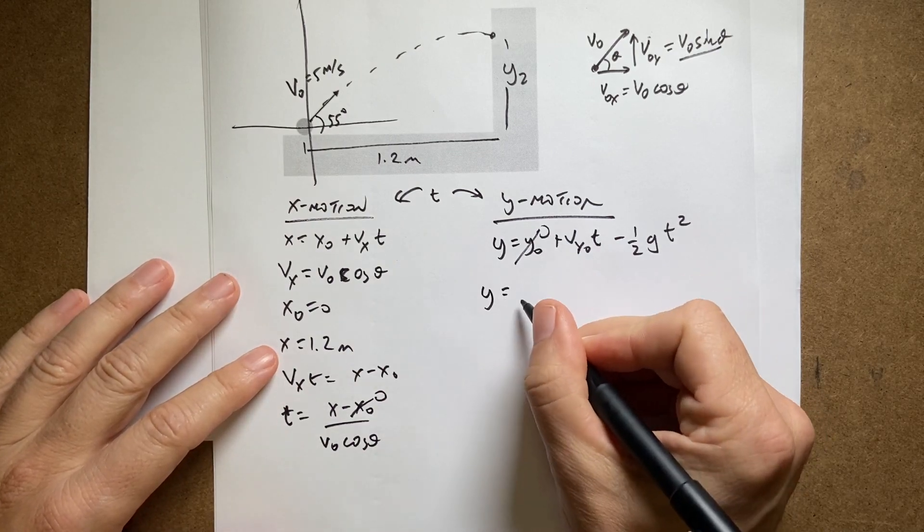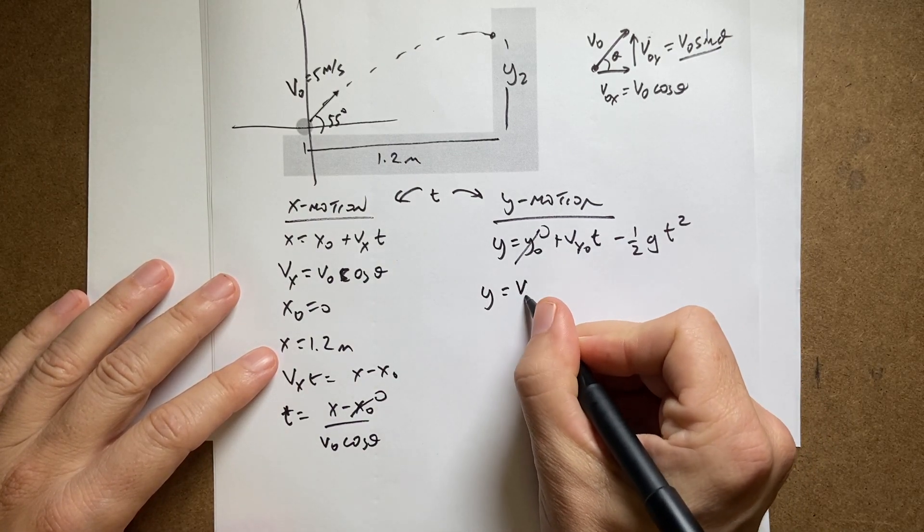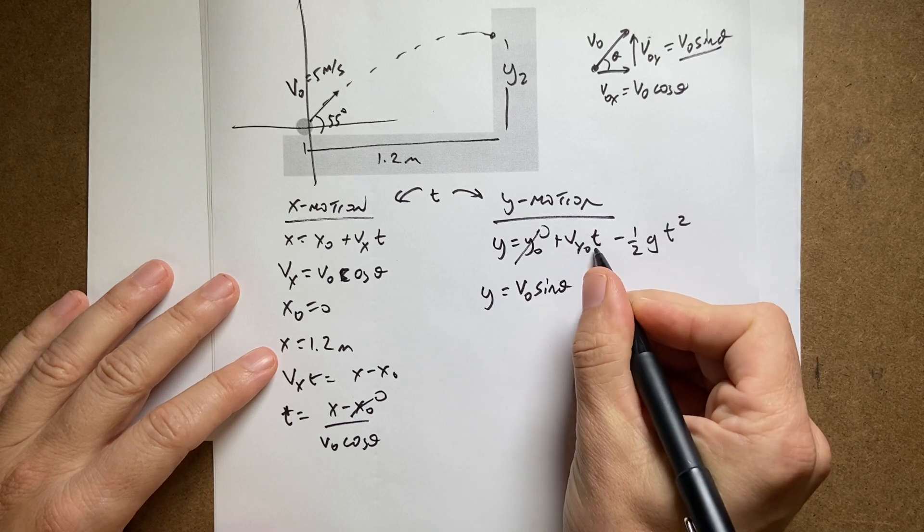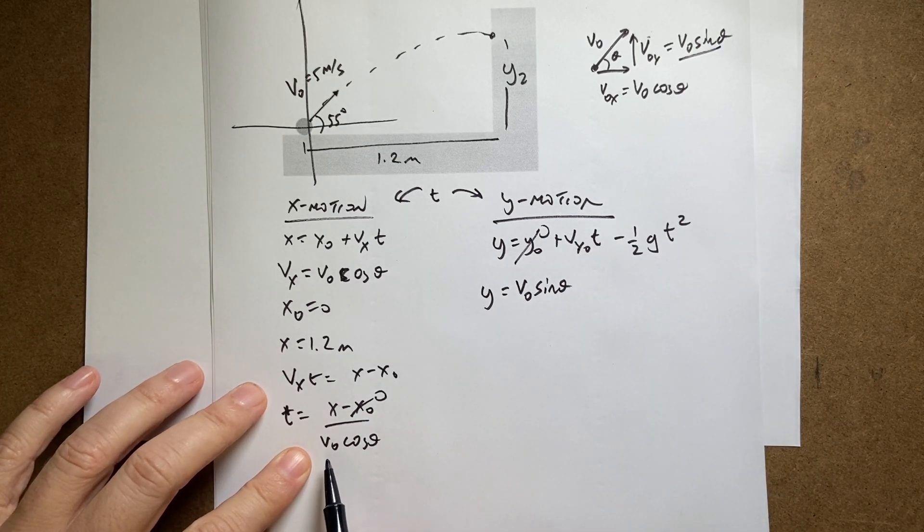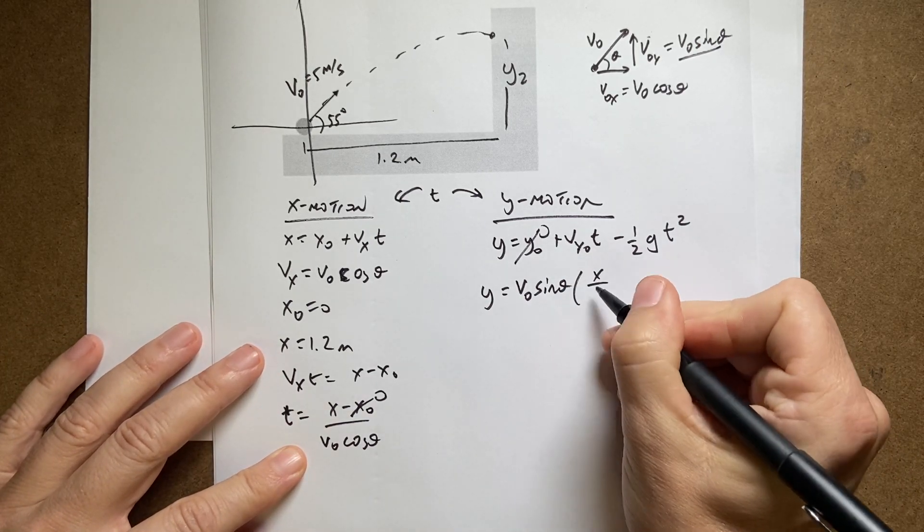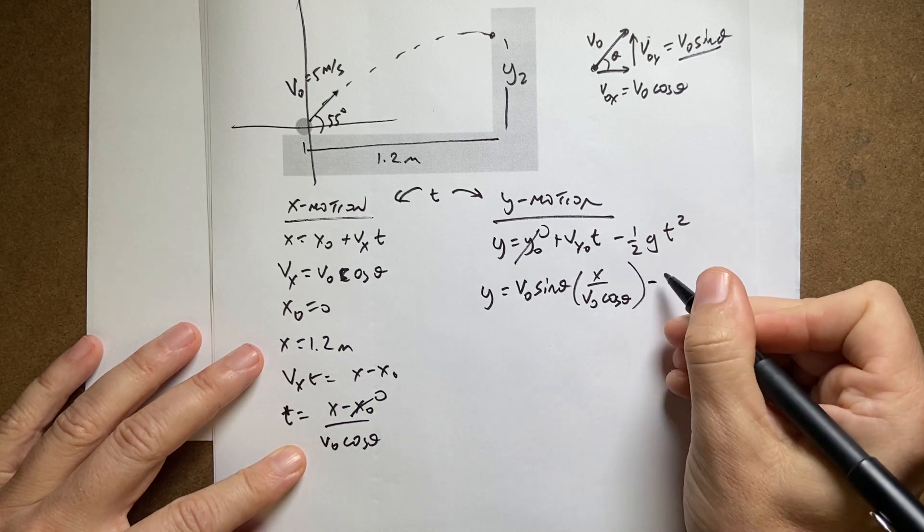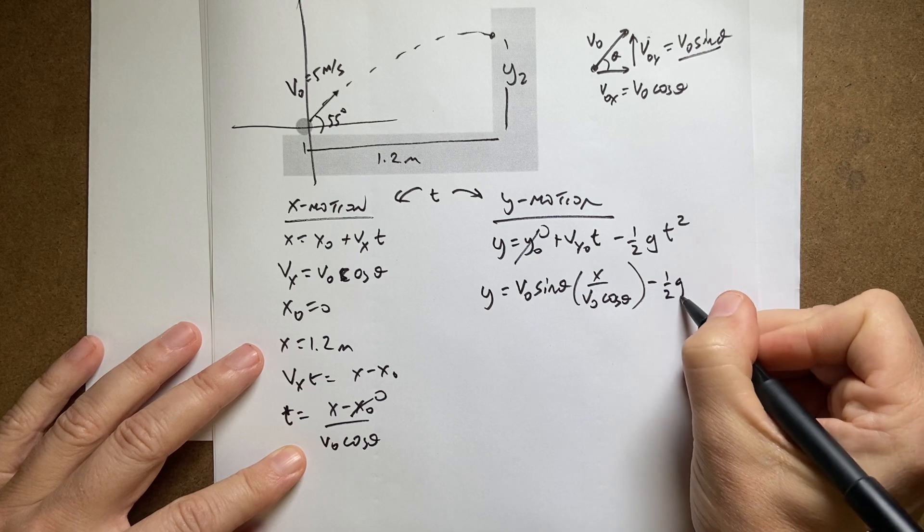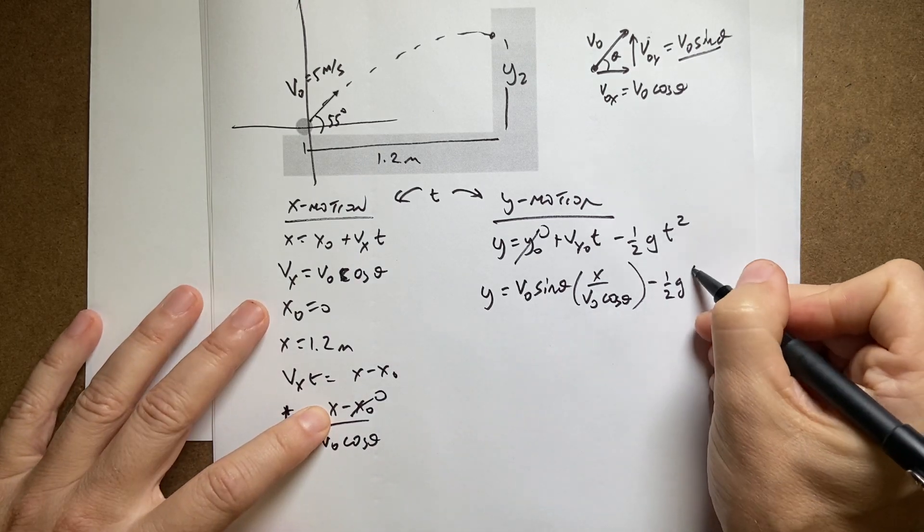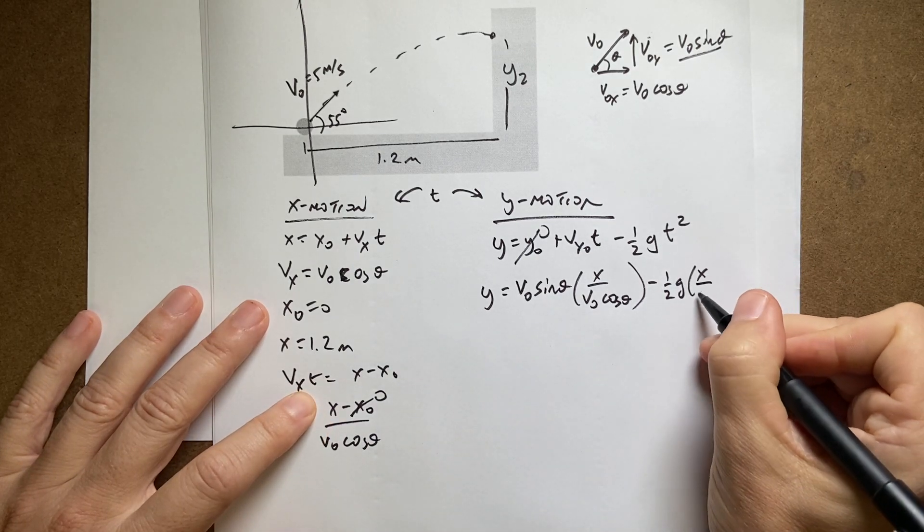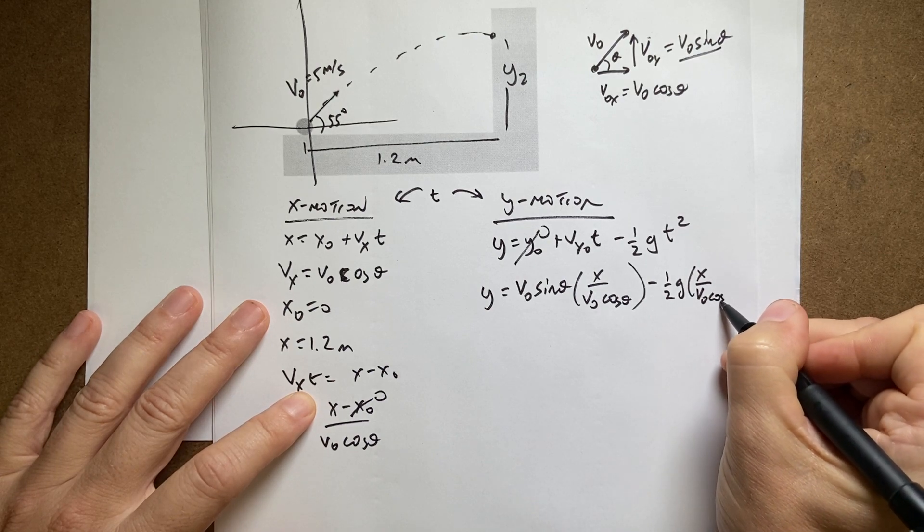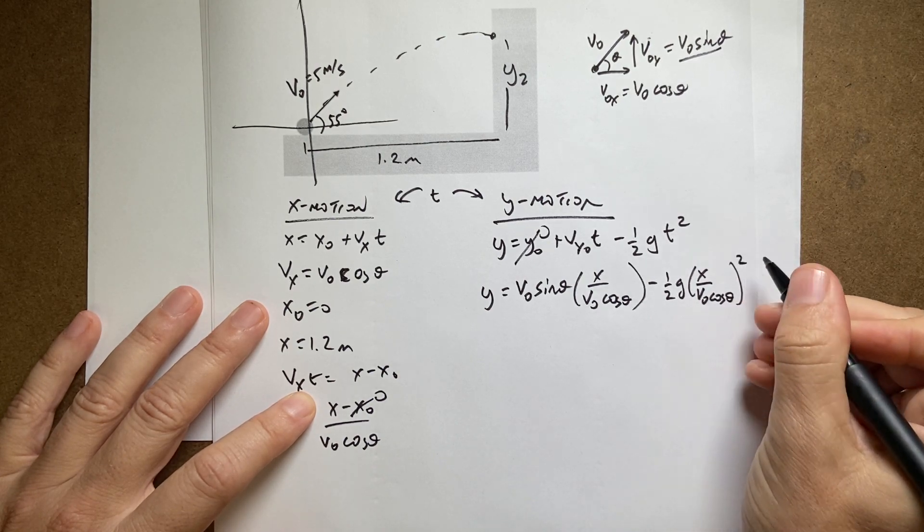So all I have to do is say Y equals V0Y, which is V0 sine theta, times T, but that's T. X over V0 cosine theta, minus 1 half G times T squared, which is going to be X over V0 cosine theta squared.